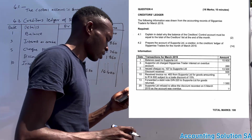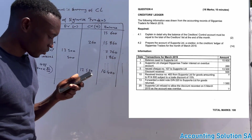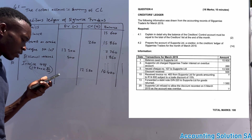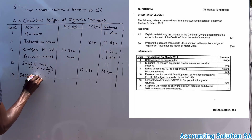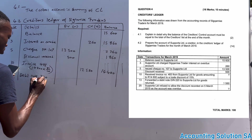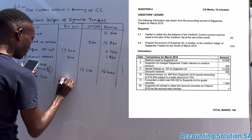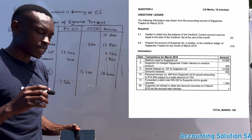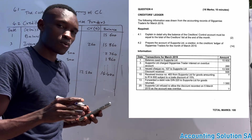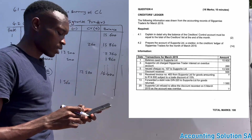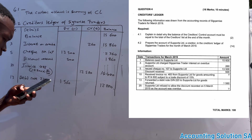On the 13th, we forwarded debit note number 220 to Supporter Ltd for goods returned, amounting to one thousand five hundred and sixty. A debit note simply means we returned something, so our liability decreases — it goes on the debit side at one thousand five hundred and sixty. We can't pay for something we've returned. After subtracting, the balance becomes twelve thousand eight hundred and eighty.